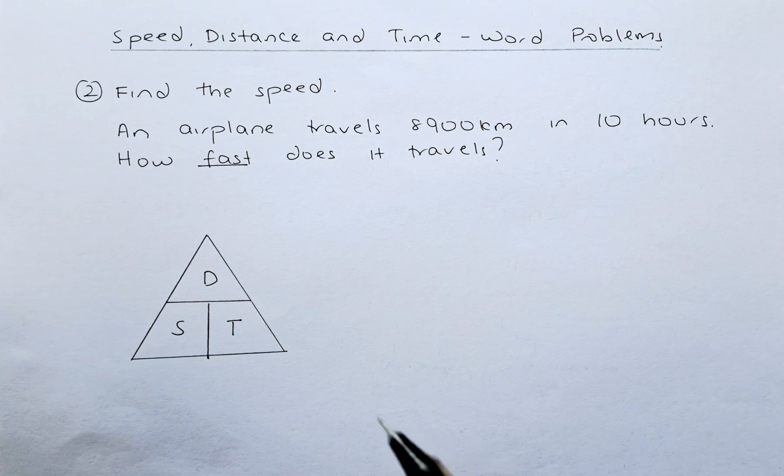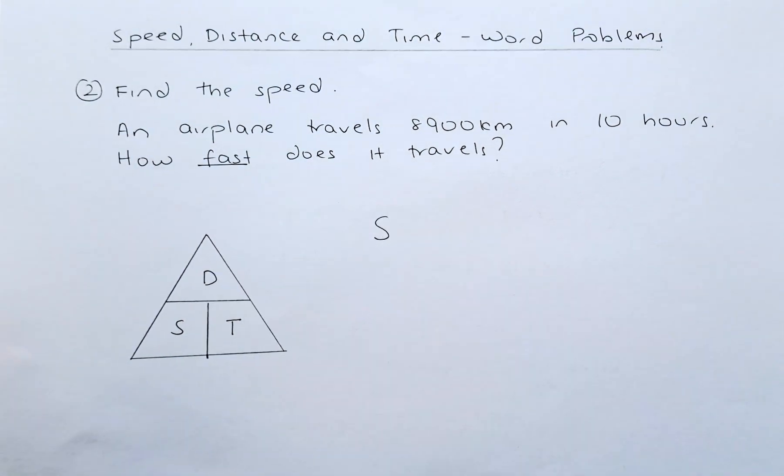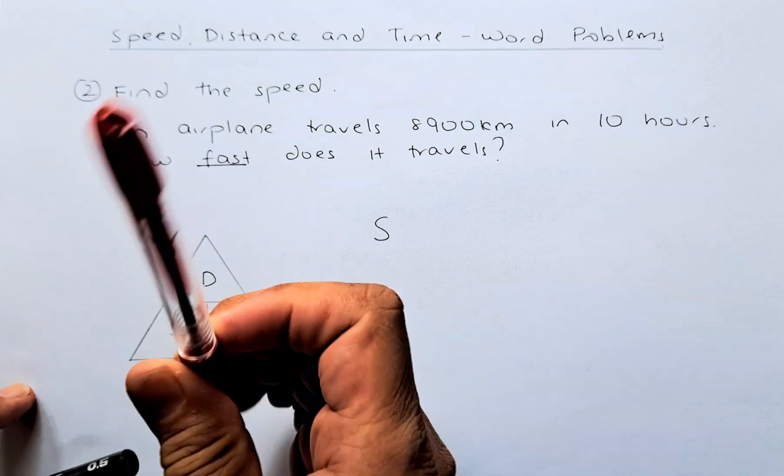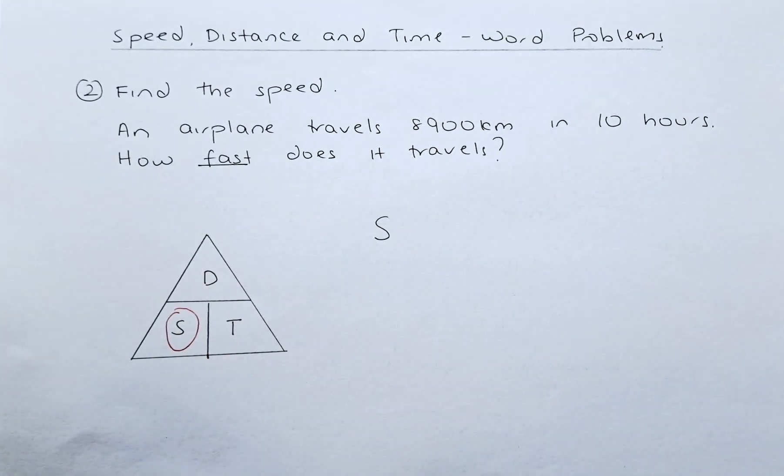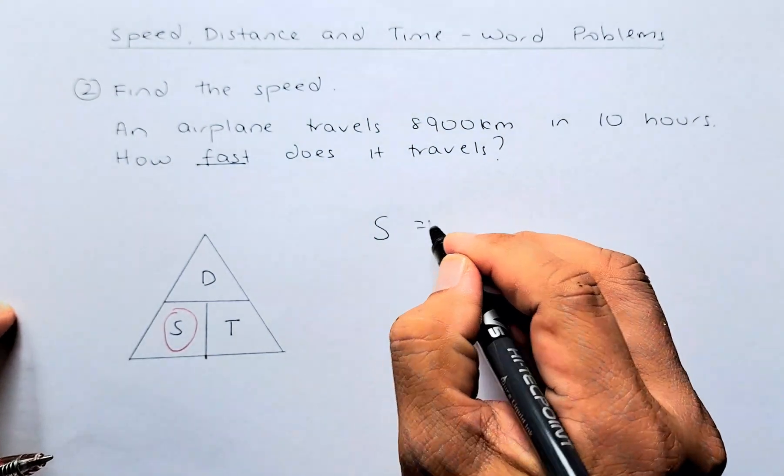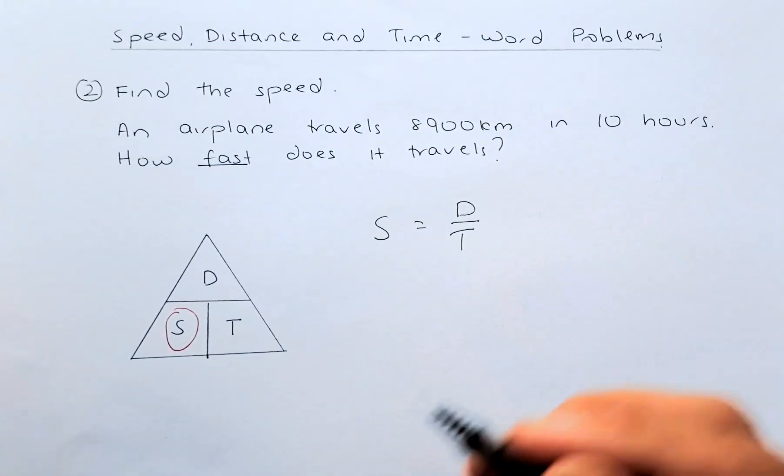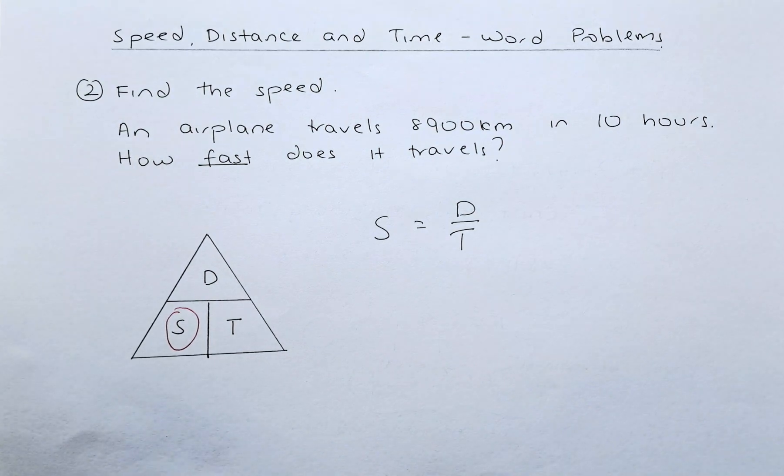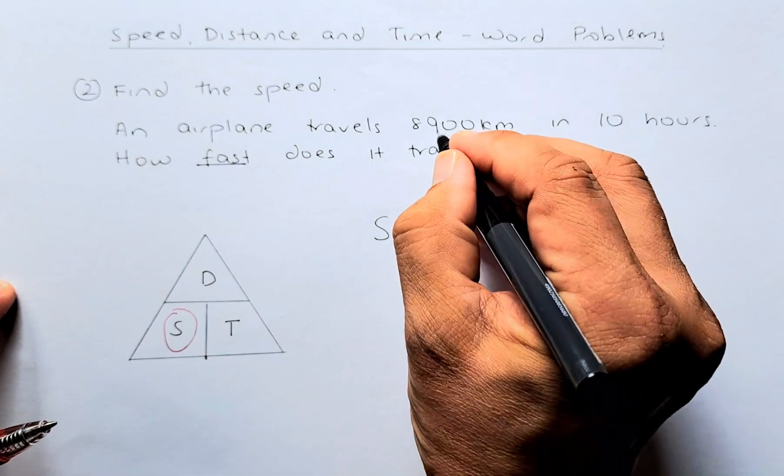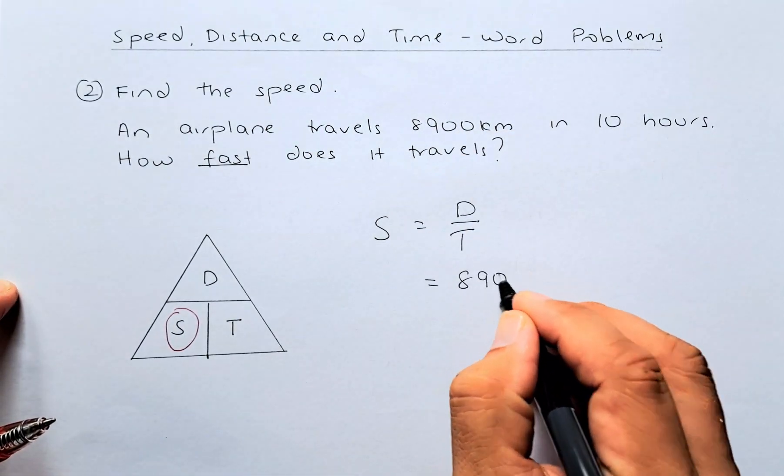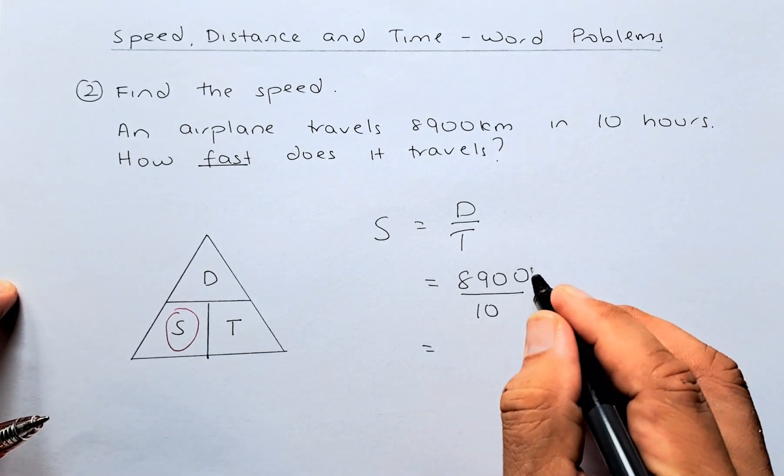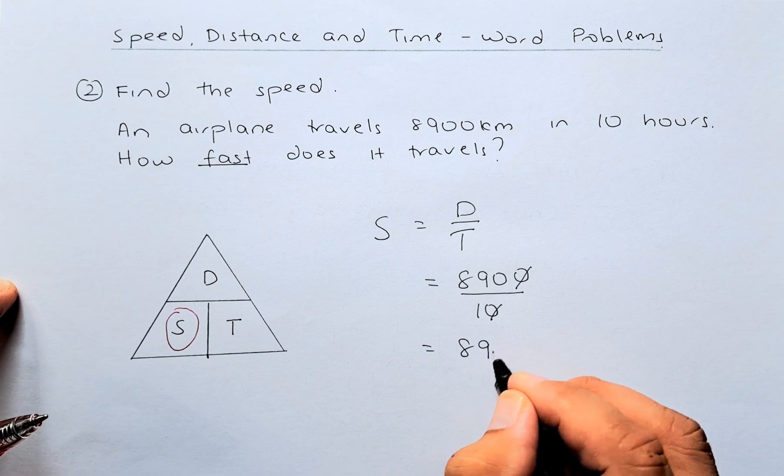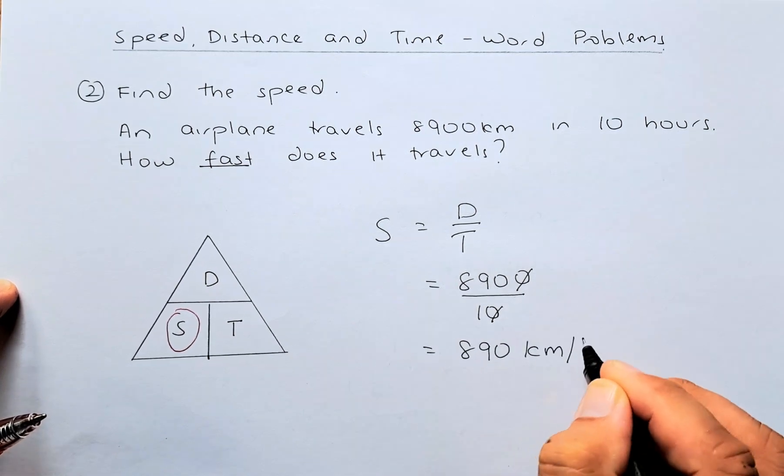To find speed, you just need to circle the speed. And this time, you have D over T. D is on top of T. So the formula is going to be speed equal to distance divided by time. So the next step, you are going to substitute the numbers. The distance is 8,900 km and the time is 10 hours. So you calculate them. You cancel the zero. The answer is 890 km per hour.